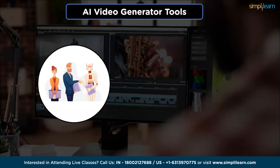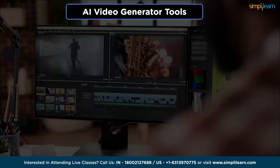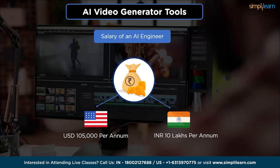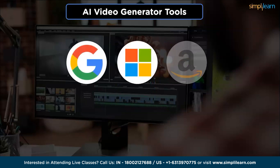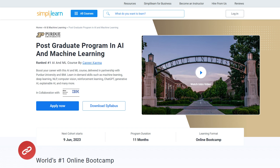With increasing demand for AI tools, a plethora of exciting career opportunities arise across industries. Roles such as AI engineers, data scientists, NLP engineers, computer vision engineers, and AI research scientists offer prospects to work with cutting-edge technologies. According to Glassdoor, the average salary of an AI engineer in the United States is up to $105,000 per year, while in India it amounts to 10 lakh annually. Leading global companies like Google, Microsoft, Amazon, Goldman Sachs, Apple, and JPMorgan provide exceptional opportunities for aspiring professionals in AI.